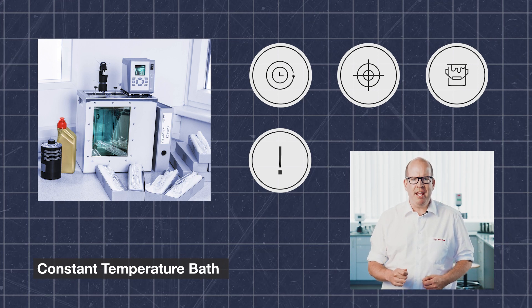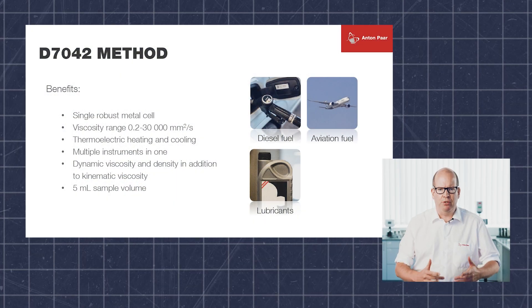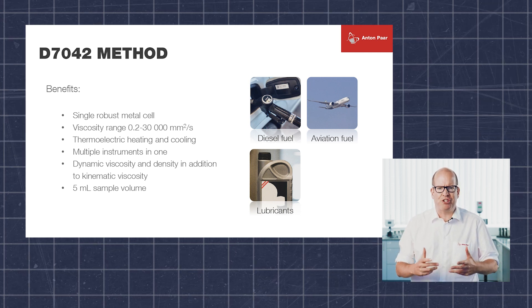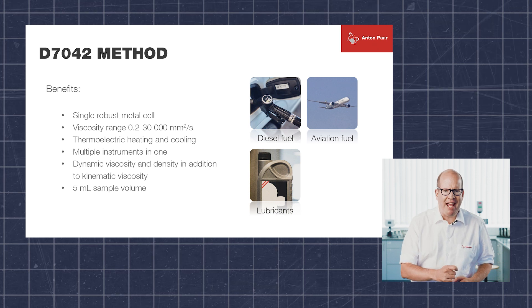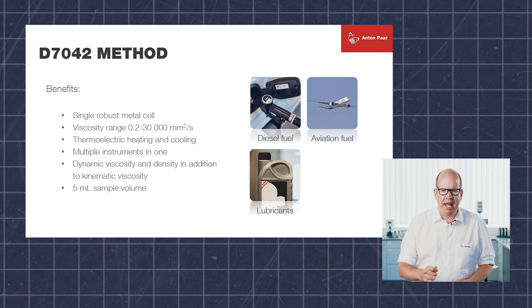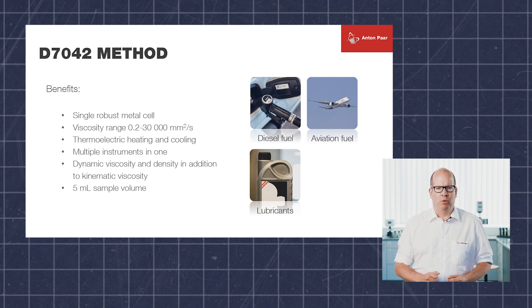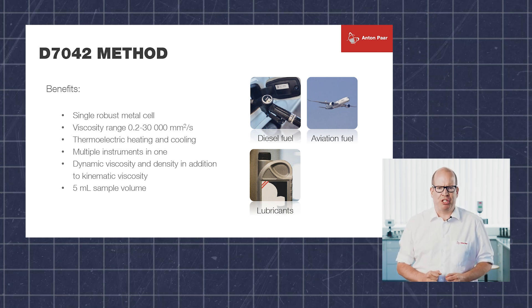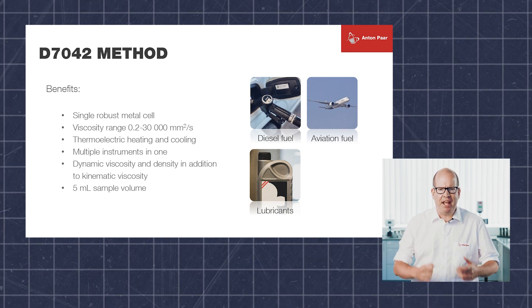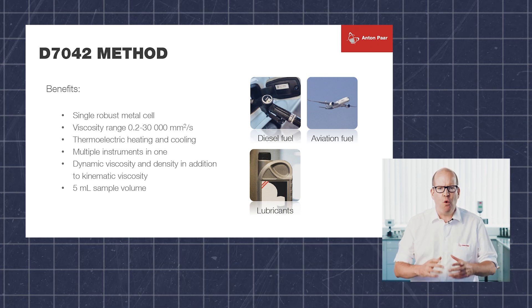That's why two Austrian engineers came up with the D7042 method — they applied now-available technologies to eliminate the difficulties associated with measuring viscosity via the D445 method. The benefits of D7042 include measurement of viscosity with a single robust metal cell, with which a remarkably large viscosity range can be covered and which can be thermoelectrically heated and cooled. This means, in effect, the combination of multiple instruments in one, with temperature changes performed in minutes. D7042 also allows determination of other parameters like dynamic viscosity and density from a sample volume as low as five milliliters.